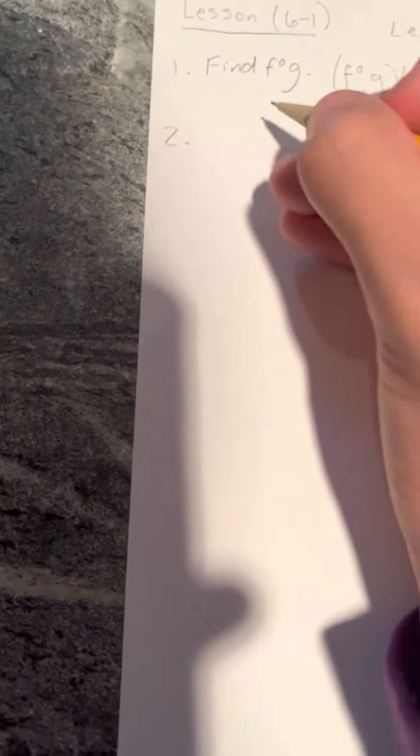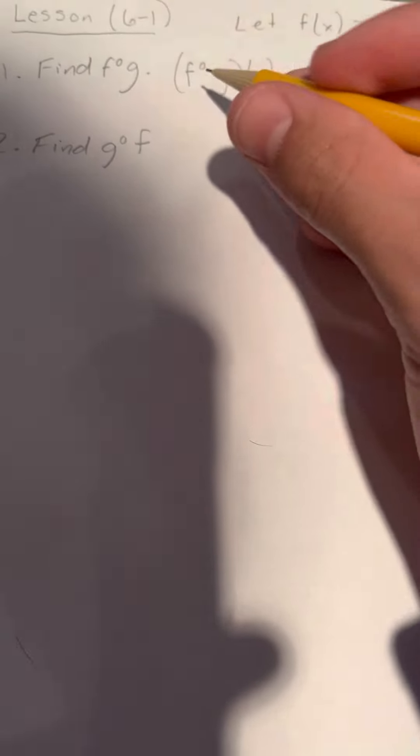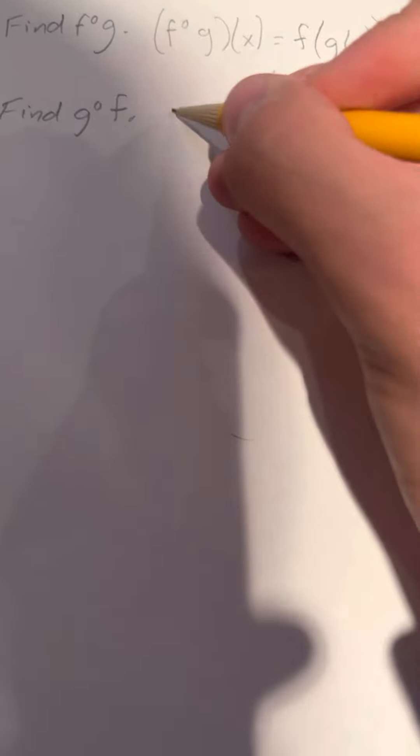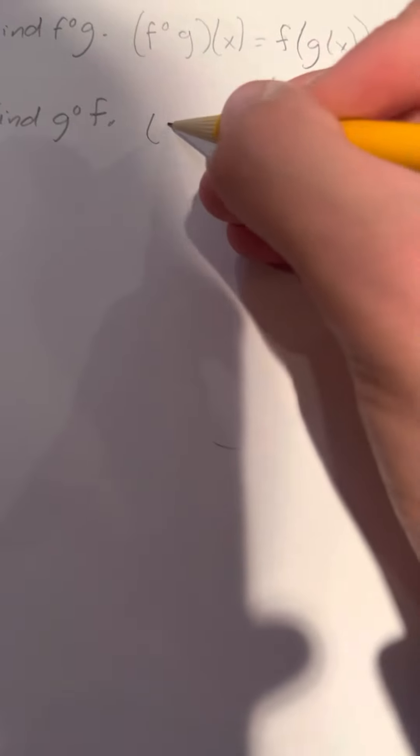Number 2, find g∘f. It's the same thing, but instead of having f on the outside, you have g. So (g∘f)(x) equals g(f(x)). This time, g is on the outside and f(x) is on the inside.